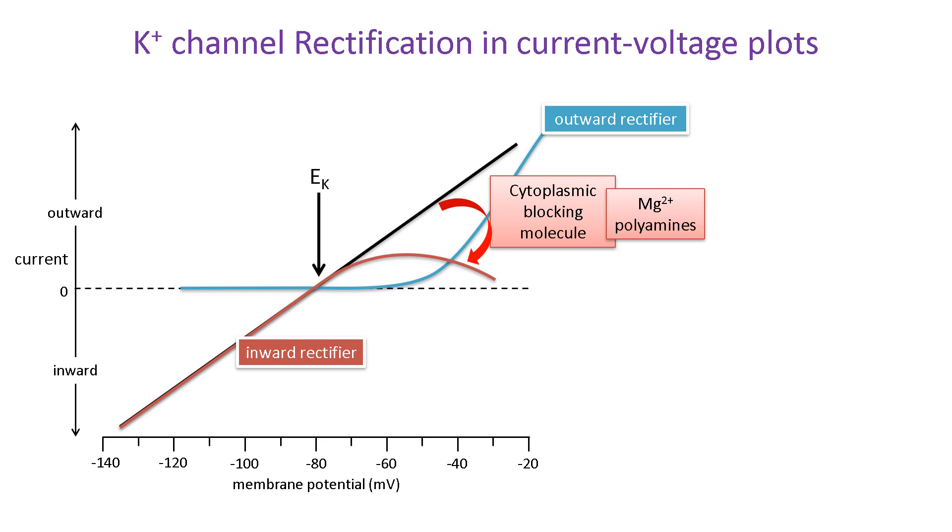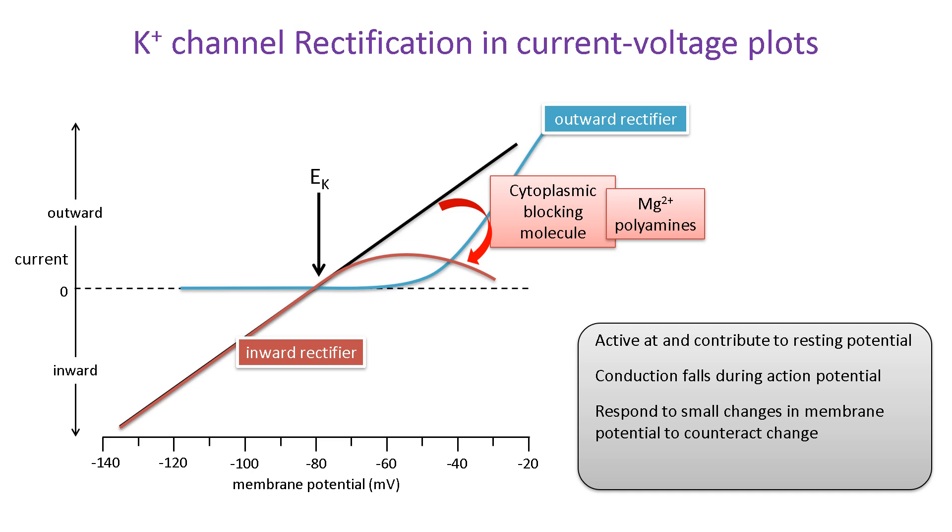The current voltage relationship for an inward rectifier has important consequences for cell activity. Firstly, these channels are often open at the resting membrane potential. So, they mediate potassium efflux at the resting potential and contribute to the resting membrane potential. But potassium efflux diminishes during an action potential so they have a relatively minor role in these events. Importantly, inward rectifiers can respond rapidly to small depolarizations or hyperpolarizations around the resting potential of cells like neurons and cardiac myocytes to counteract the change. They therefore have an important stabilizing effect on the resting membrane potential in these cells.